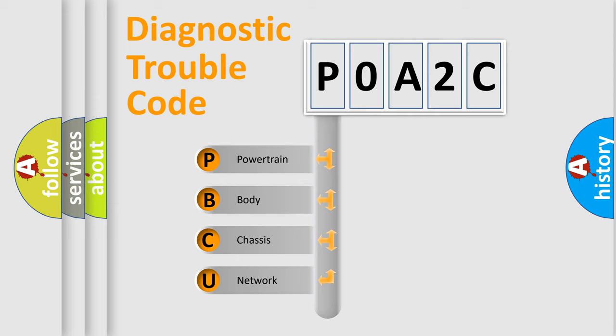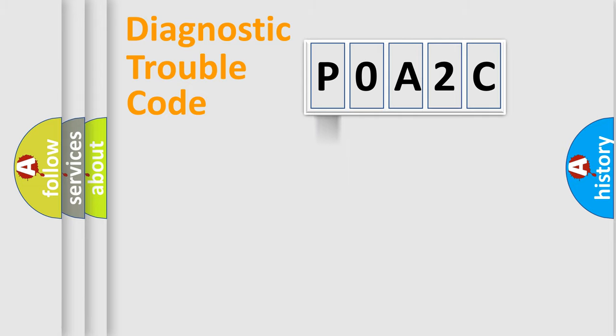We divide the electric system of automobile into four basic units: Powertrain, Body, Chassis, Network. This distribution is defined in the first character code.